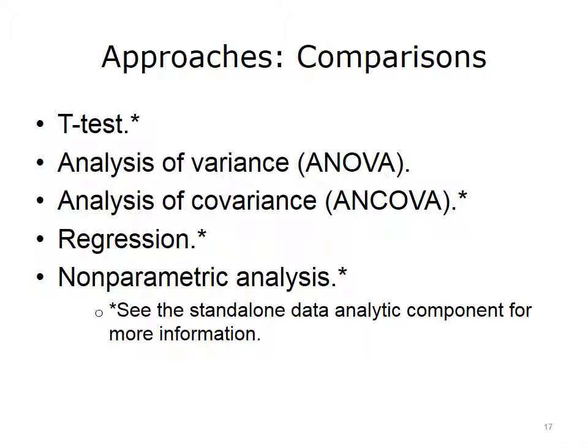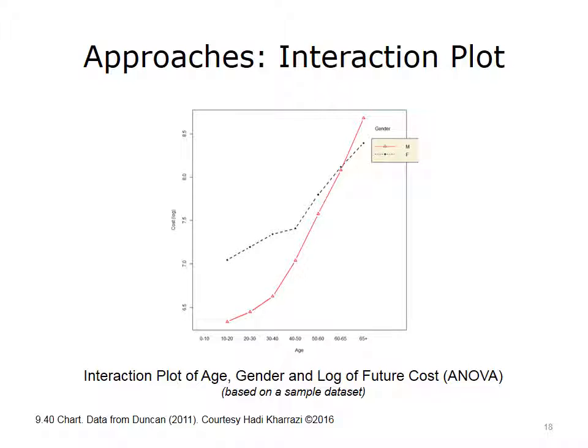Comparison methods can be used to find significant difference of means or variances in two given populations. The comparative techniques are often used to guide the development of predictive models in population health analytics. This figure shows the interaction plot of age, gender, and log-transformed cost. The solid line shows the increase of cost in males as age increases, while the dotted line shows the increase of cost in females as age increases. Note that there is a deflection point at the far right side of the diagram where the two lines cross each other.